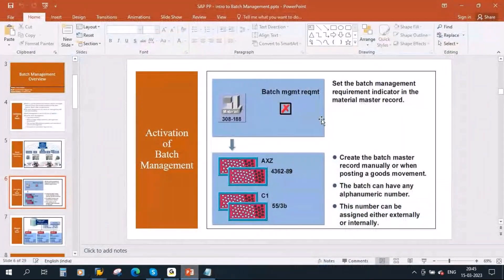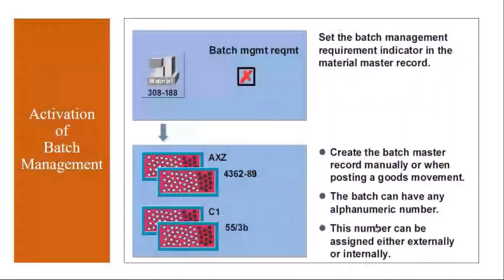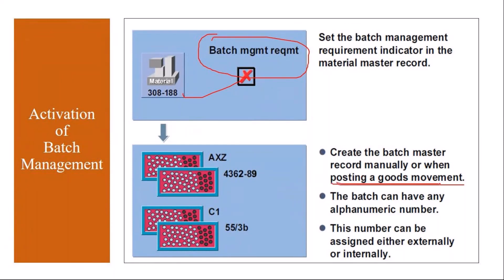Once you activate batch management for the material, whenever you do any goods movement, the system will create the batch master record. And of course, at any time you can also create the batch manually.